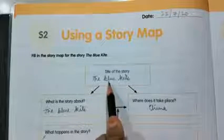First of all it has been asked title of the story. What is the title of the story? What is the heading of the story? The blue kite. This is the title.